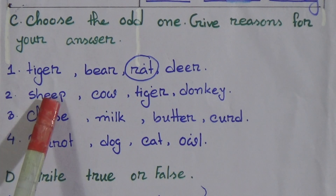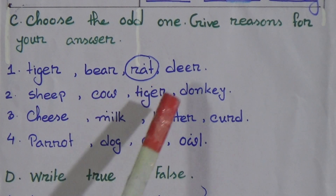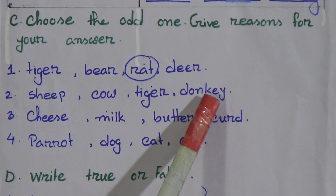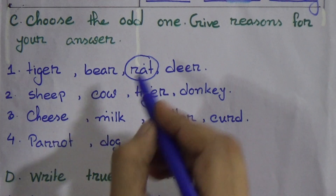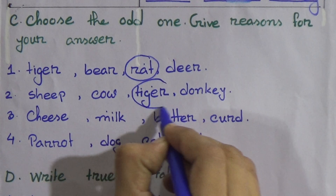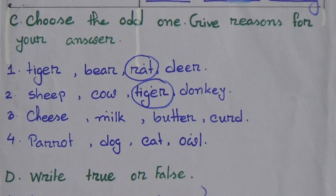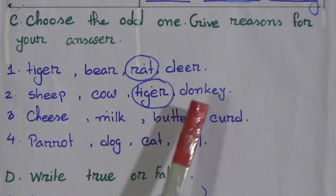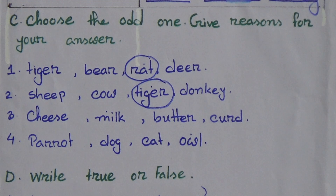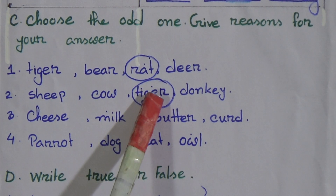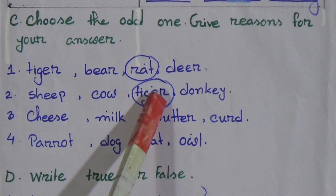Number 2: Sheep, cow, tiger, donkey. Which one is odd? Here, tiger is odd. Why? Because sheep, cow and donkey are used for carrying goods — they are beast of burden animals. Tiger is a wild animal and is different from the others.